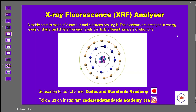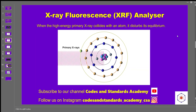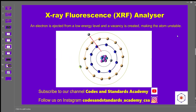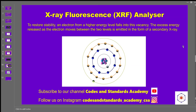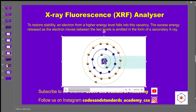Let's look at this arrangement. A stable atom is made of a nucleus and electrons revolving around it. The electrons are arranged in different energy levels, and different energy levels can hold different numbers of electrons. When a high-energy primary X-ray collides with an atom, it disturbs its equilibrium. As a result, an electron is ejected from the low energy level and a vacancy is created, making the atom unstable. To restore stability, an electron from a higher energy level falls into this vacancy. The excess energy released as the electron moves between the two levels is emitted in the form of secondary X-rays.